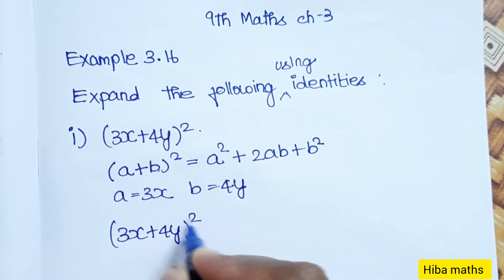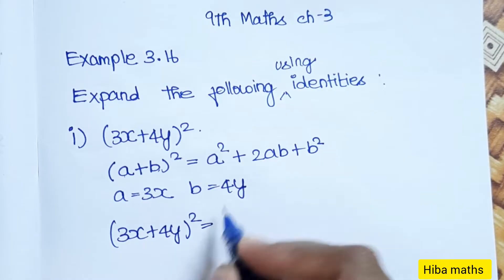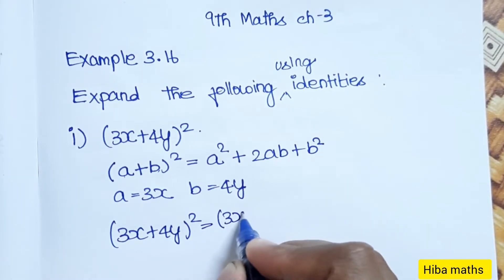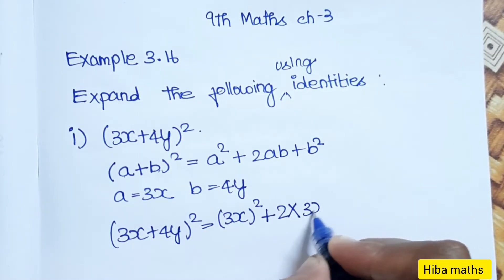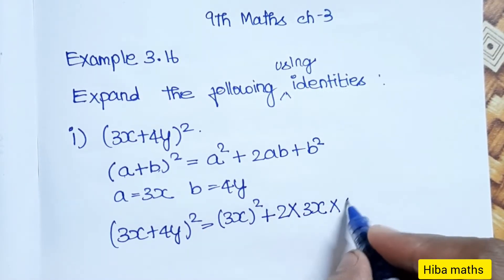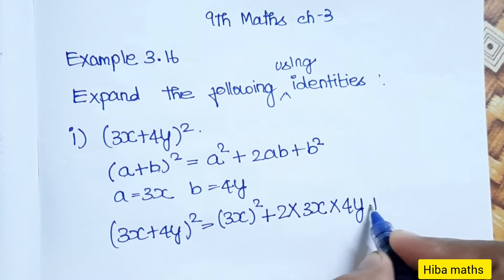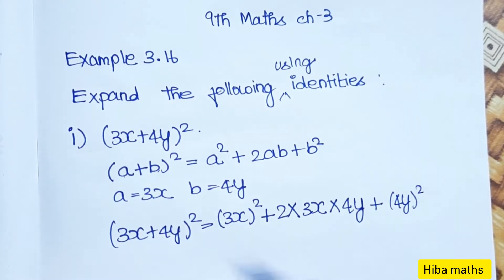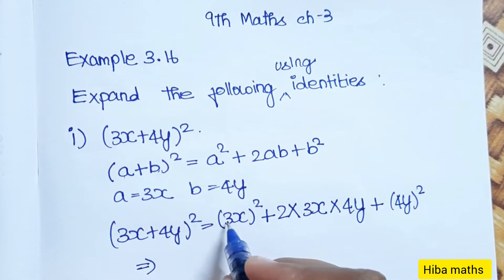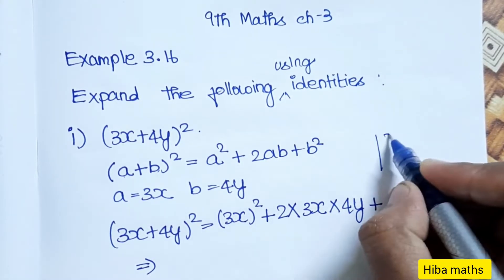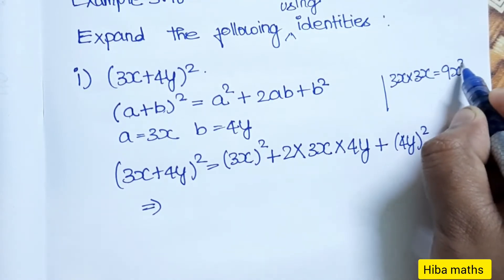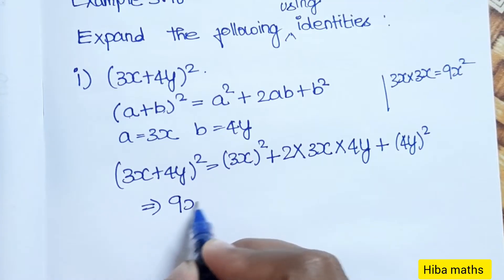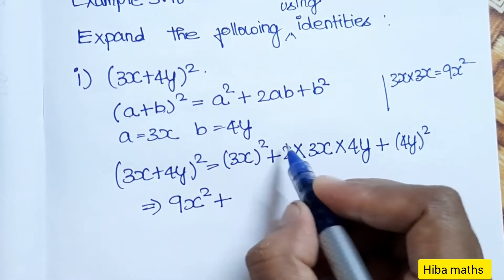(3x + 4y)² is equal to (3x)² plus 2 into 3x into 4y plus (4y)². Now (3x)² equals 3x into 3x, which gives 9x squared.